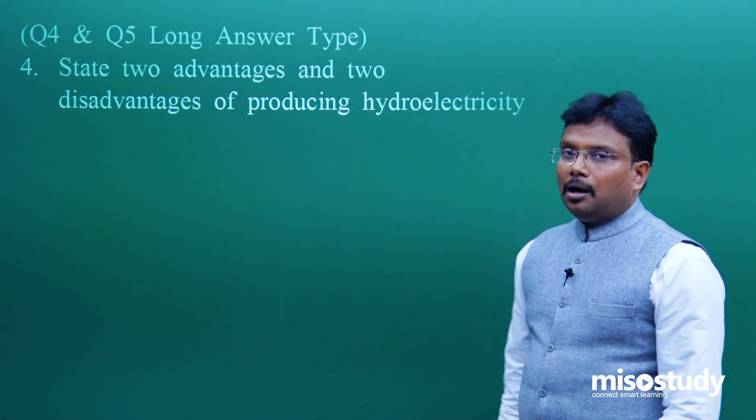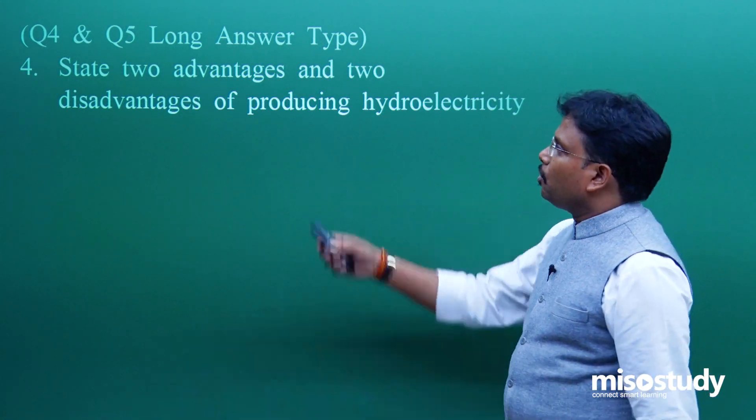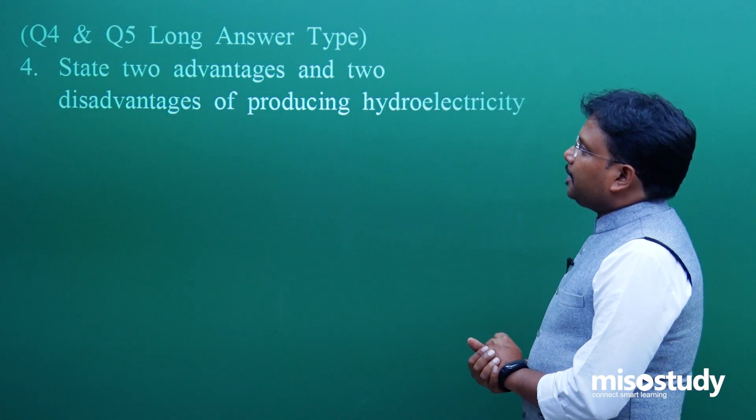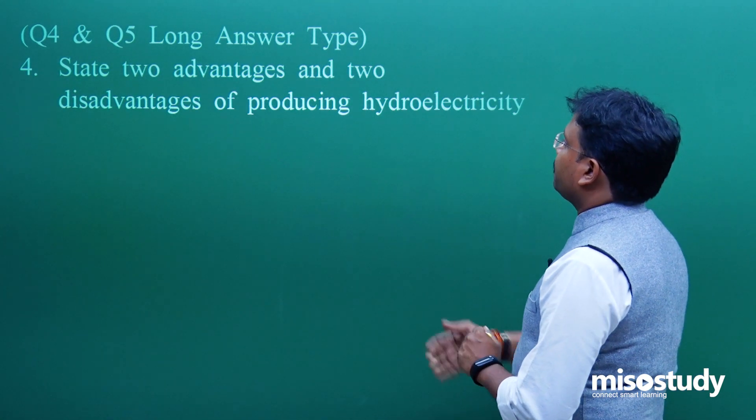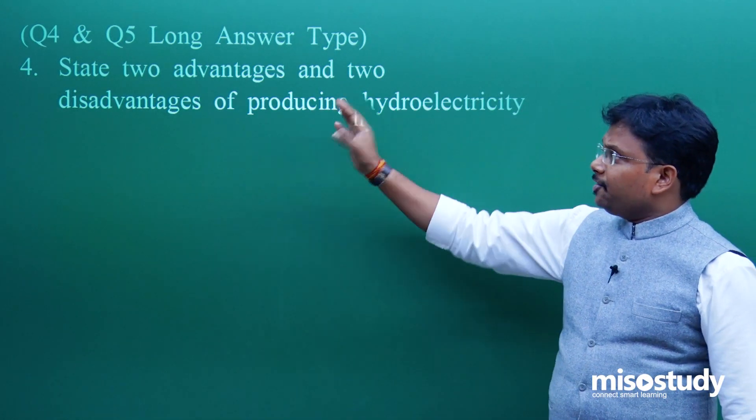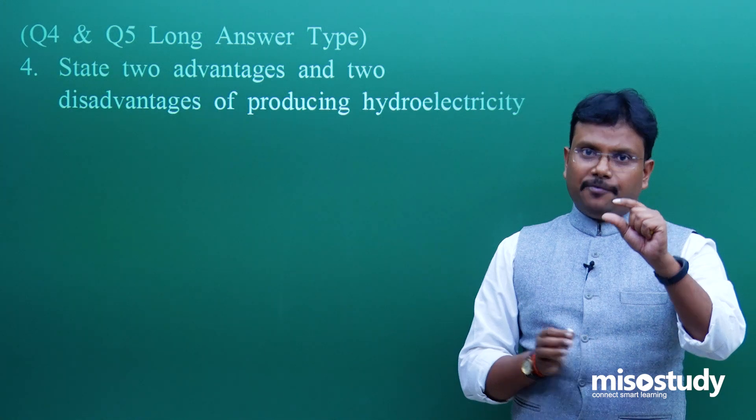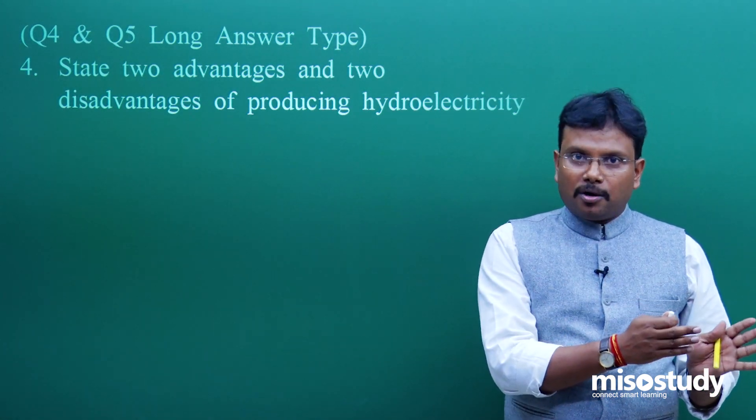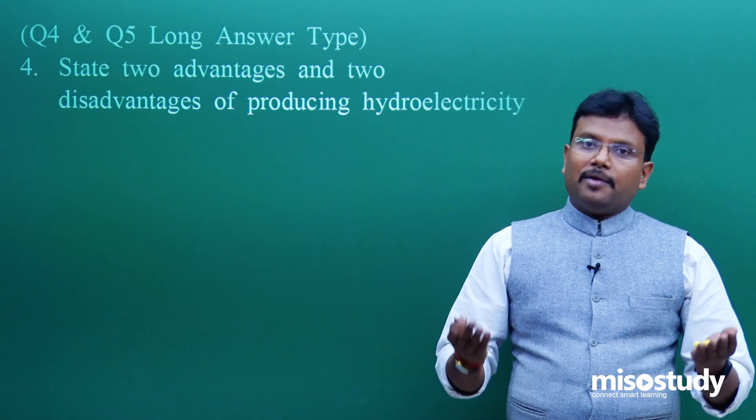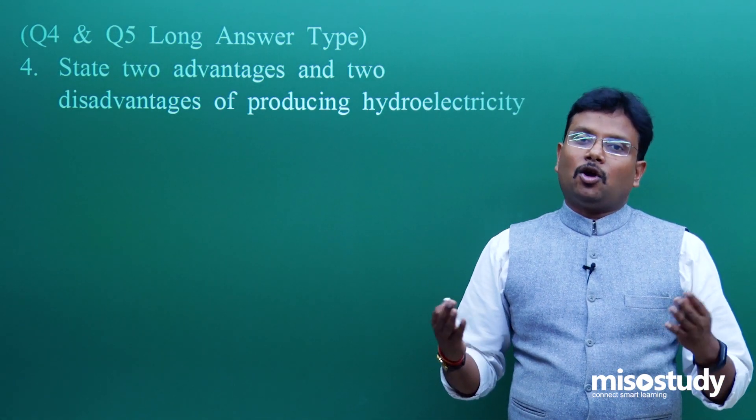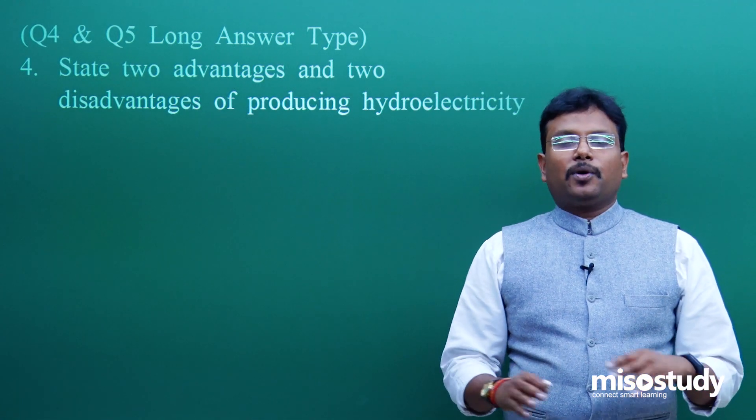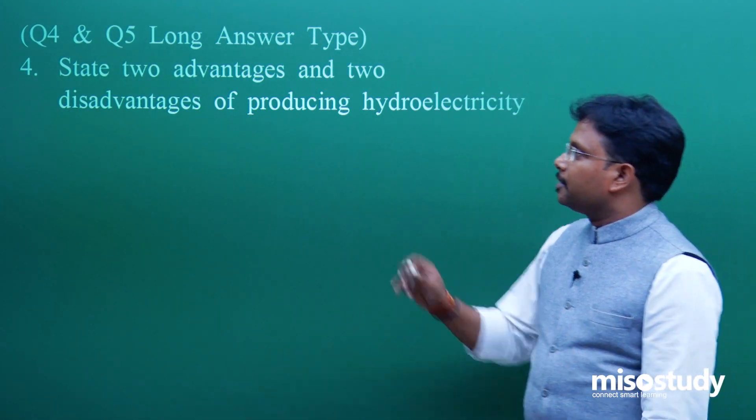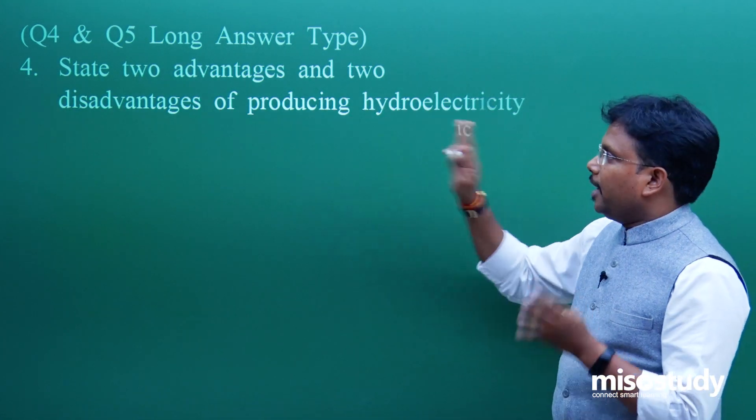Now question number 4. There are some long answer type questions. Question 4 and 5 I placed in that category. First is state two advantages and two disadvantages of producing hydroelectricity. Now it is a long answer type question, so I think you should mention few points. Actually in this particular explanation, I will not write down the complete answer. It is available in our ebook. As and when required, you can visit our website that is www.misostudy.com. From that particular website you can get a lot of courses, contact number of our helpline, and from there you can get these materials.